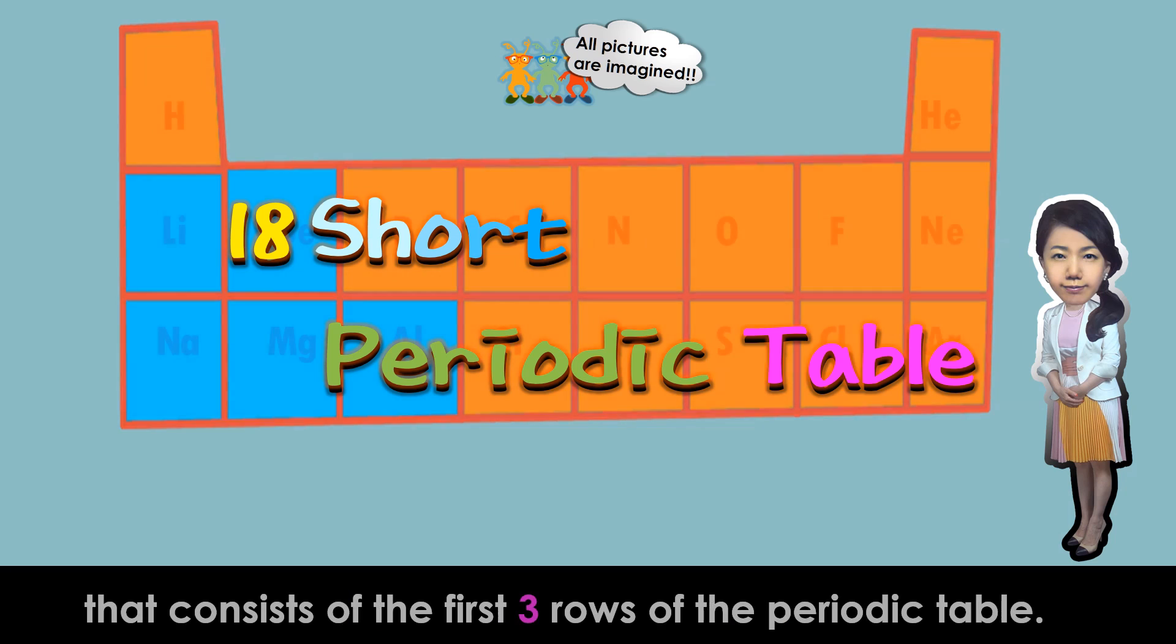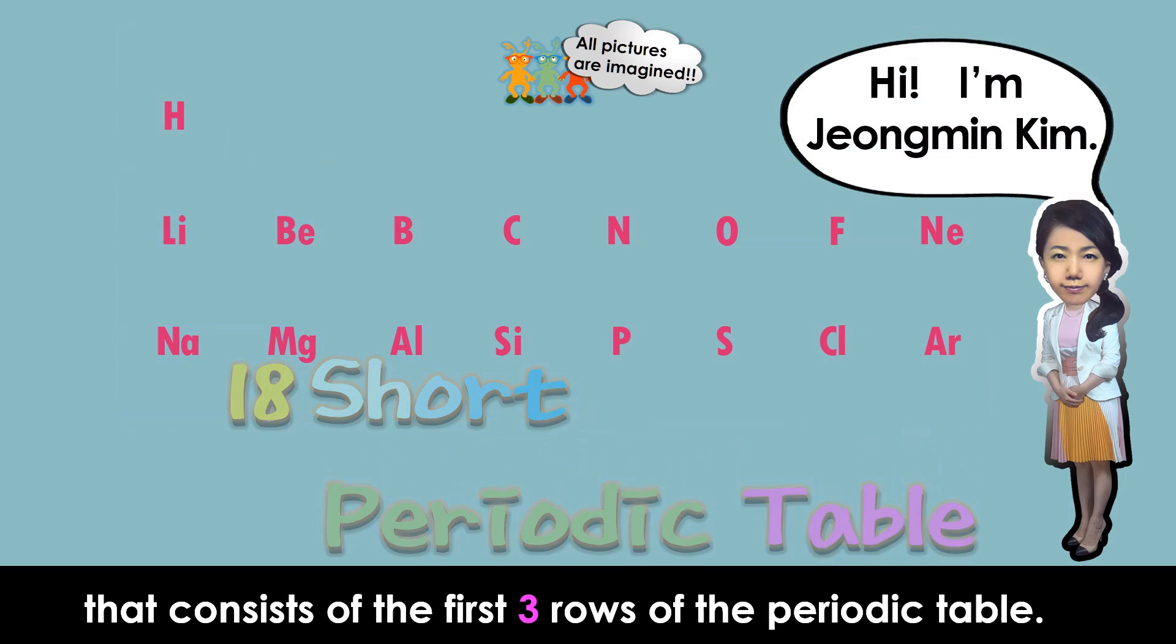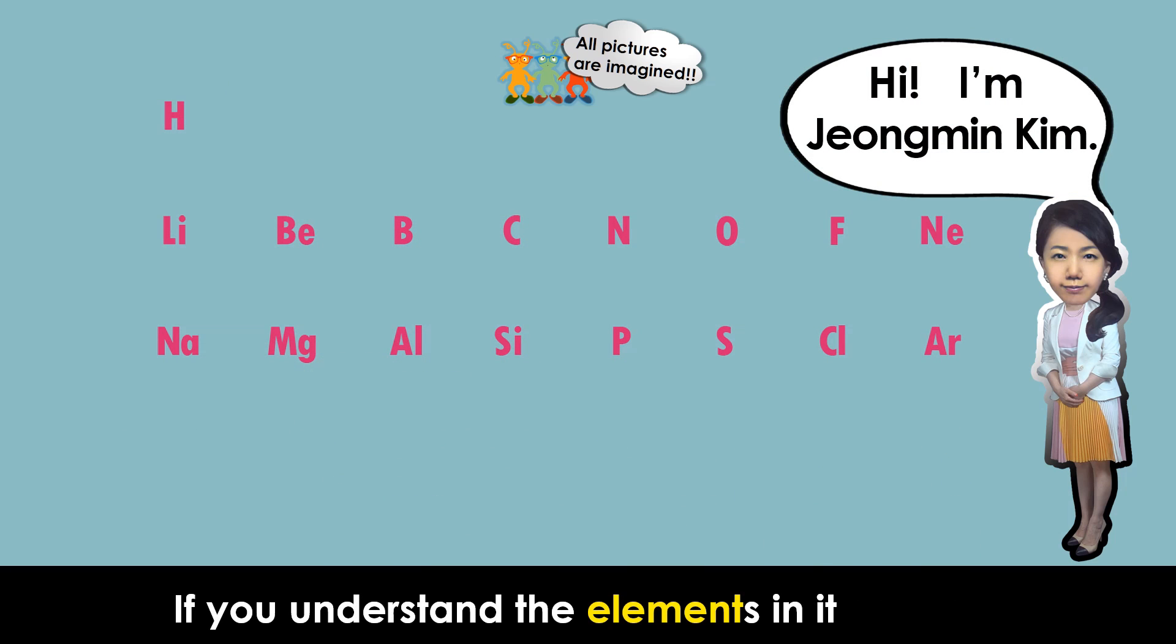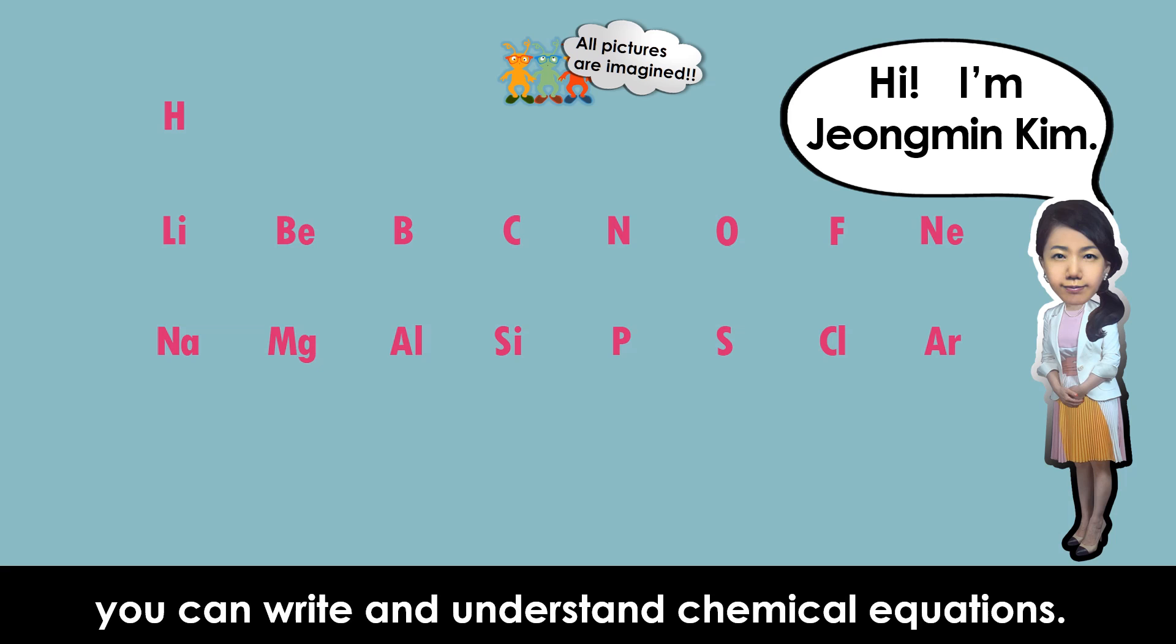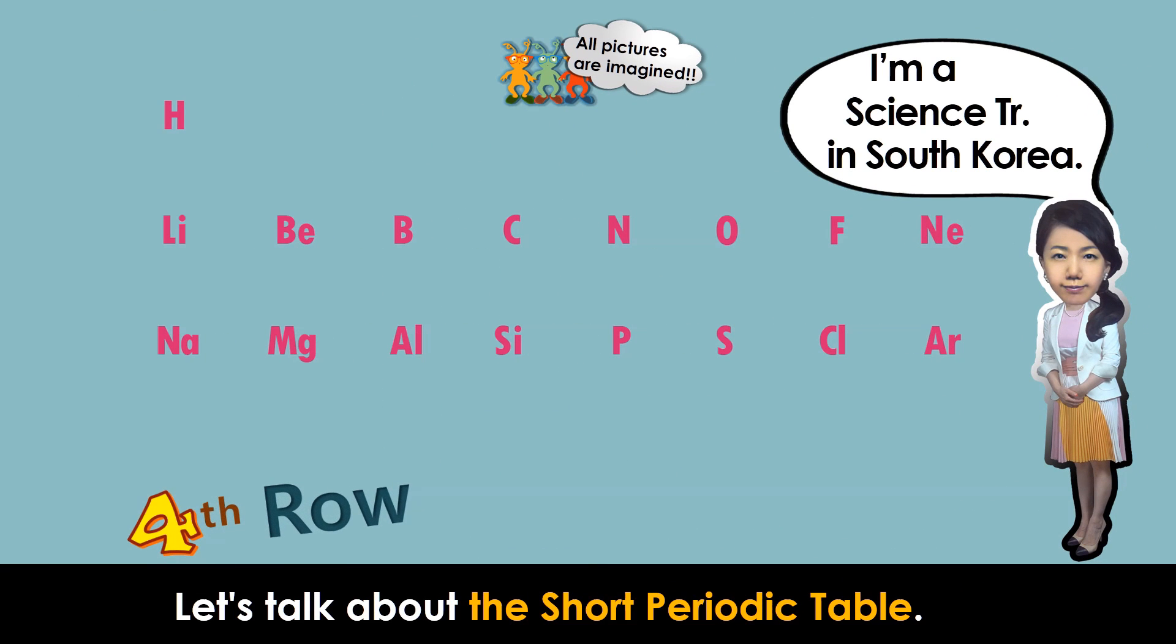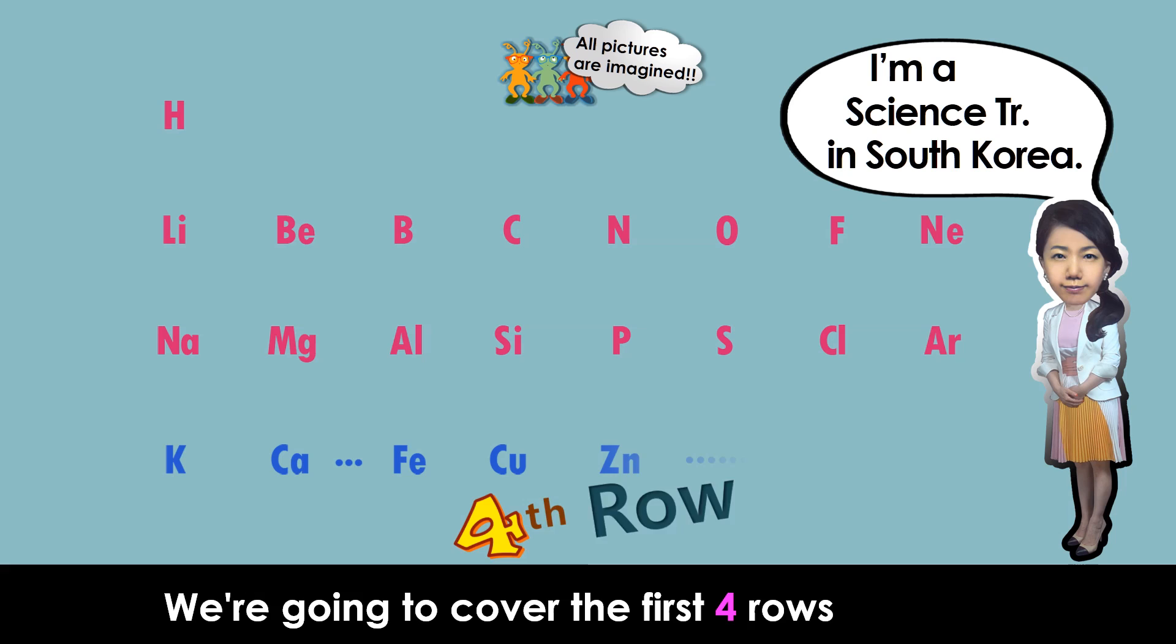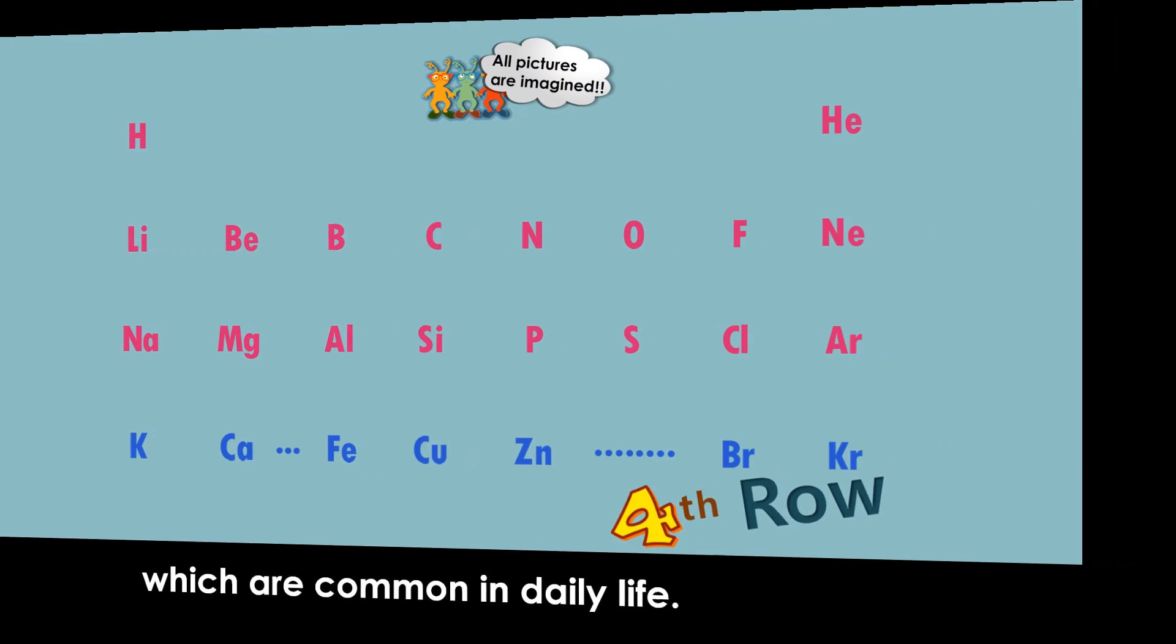This is a short periodic table that consists of the first three rows of the periodic table. If you understand the elements in it, you can write and understand chemical equations. Let's talk about the short periodic table. We're going to cover the first four rows, which are common in daily life.